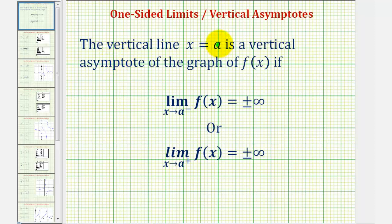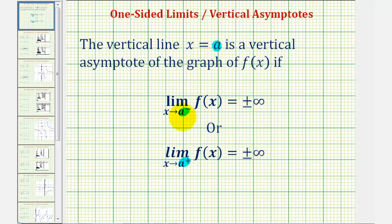The vertical line x equals a is a vertical asymptote of the graph of f of x if the limit as x approaches a from the left or from the right of f of x equals plus or minus infinity. So if these one-sided limits are equal to plus or minus infinity, then we can say x equals a is a vertical asymptote.